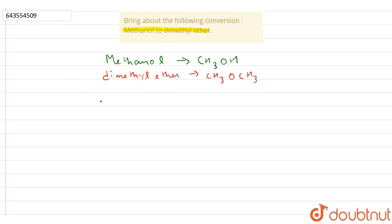Here methanol can be converted into dimethyl ether with the help of dehydrating agent which is sulfuric acid H2SO4. The mechanism of conversion of methanol to dimethyl ether...